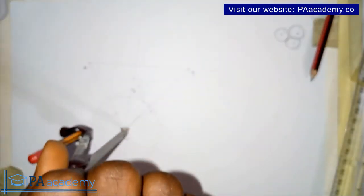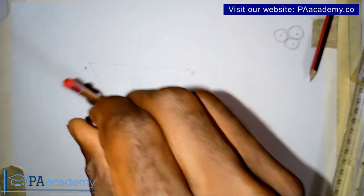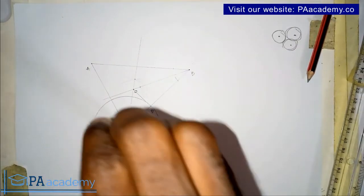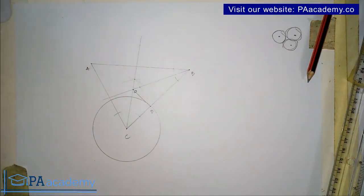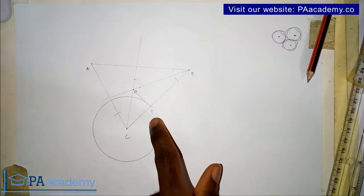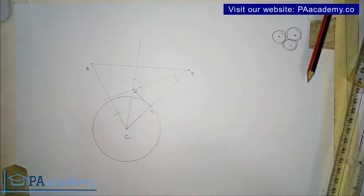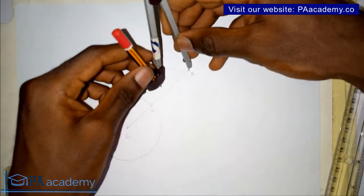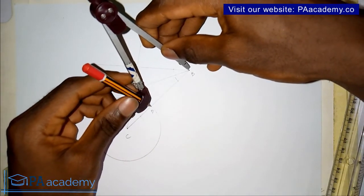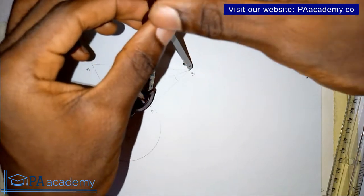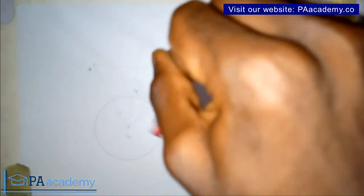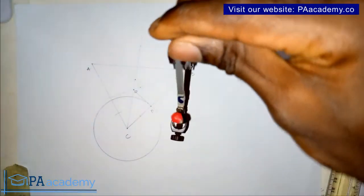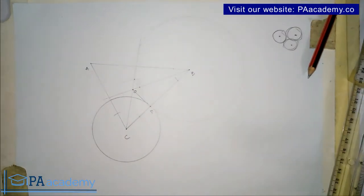If you are finding value in this video please click the thumbs up button. Now I already have the first circle with center point C. For the second circle, from point B to point D is the radius, so we place our compass point on B and adjust the pencil to point D. There we have our second circle.